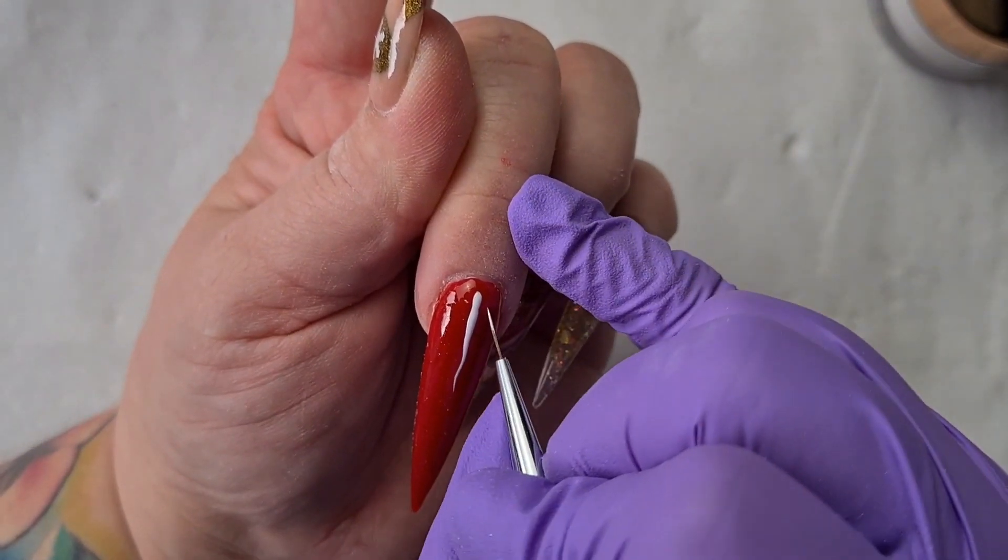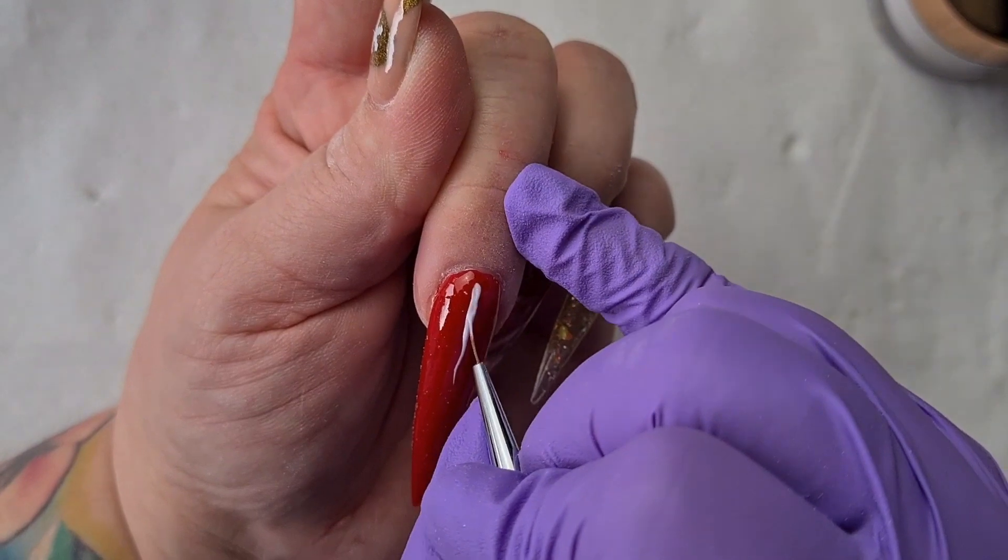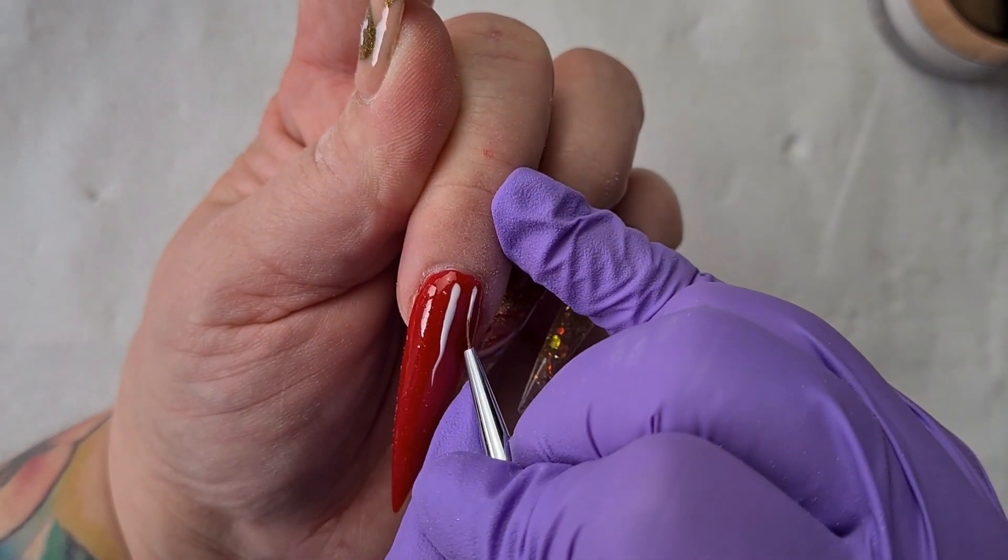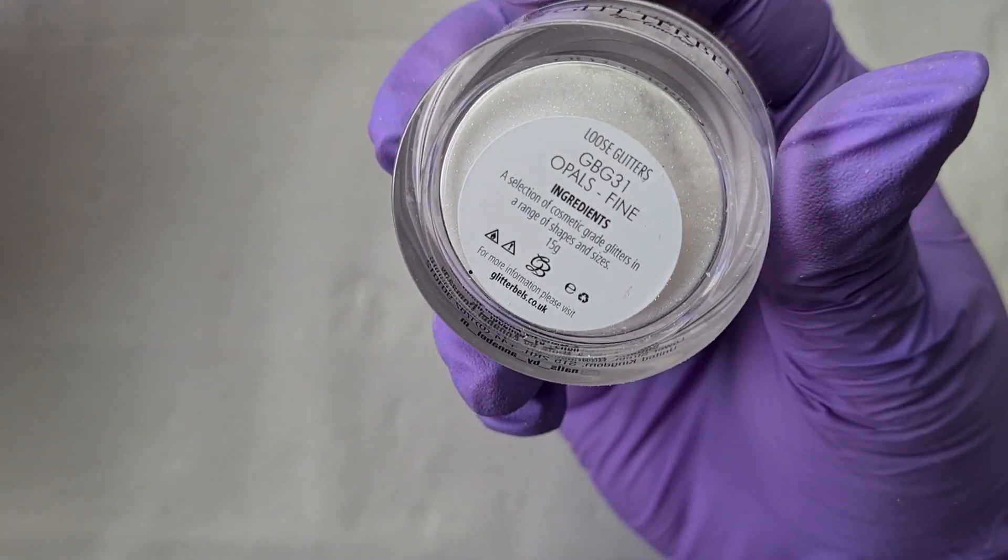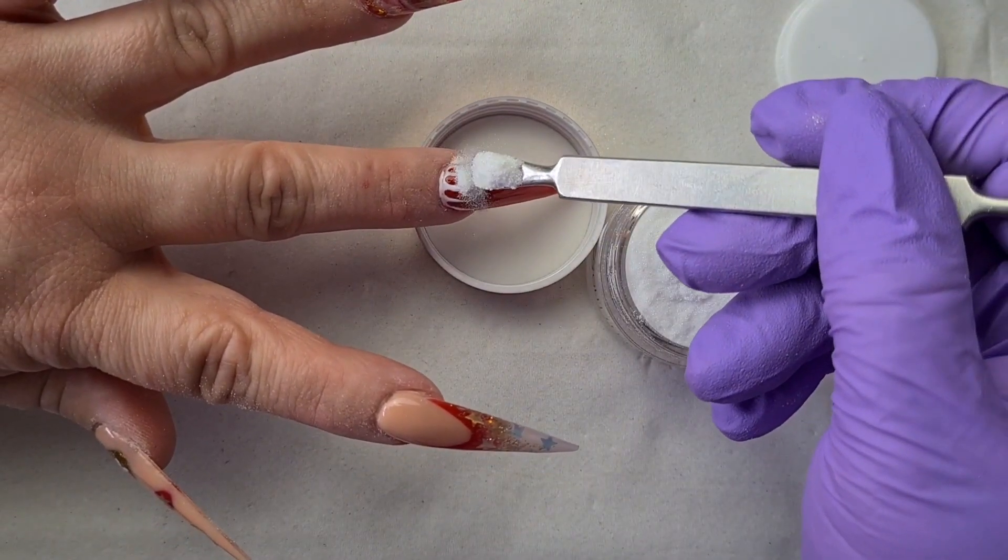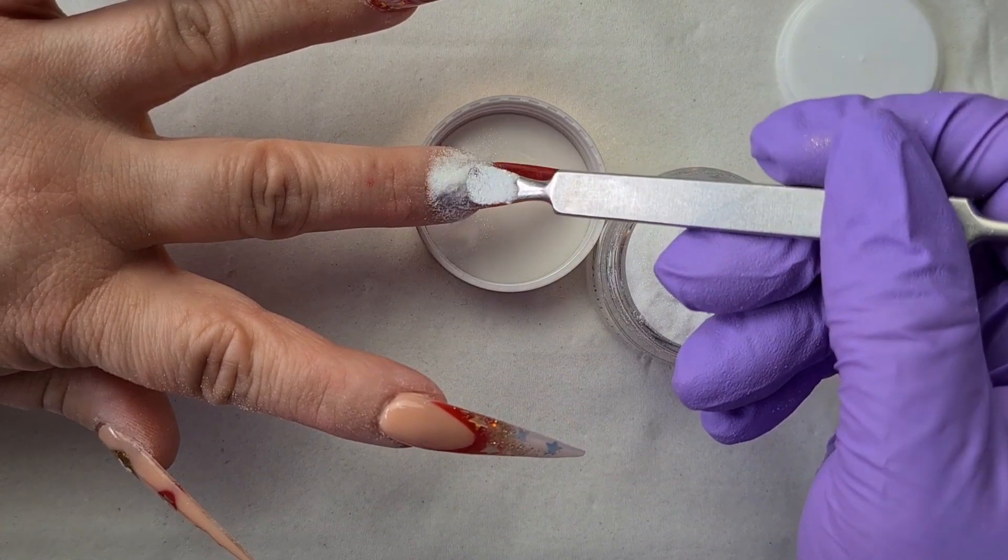And here I'm adding white gloss gel polish and I'm using my detail brush. Then I'm going to use some loose glitter or pause fine. I don't cure it just yet, I will add the glitter.